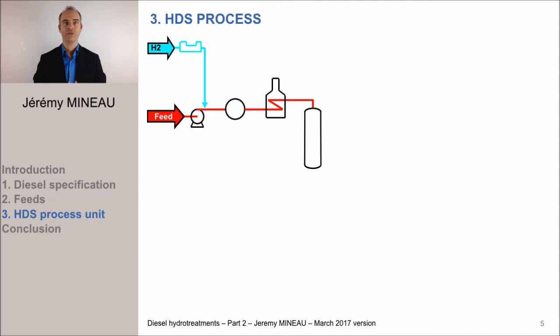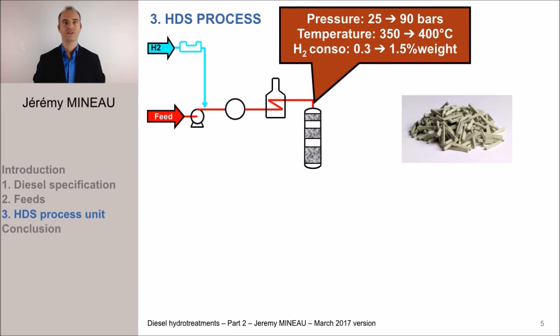In the reactor, the feed plus hydrogen mixture meets the catalyst. The typical operating conditions in the reactor are a pressure ranging from 25 to 90 bars. This pressure is selected according to the difficulty of the feed to be hydro-treated. A temperature between 350 and 400 degrees.